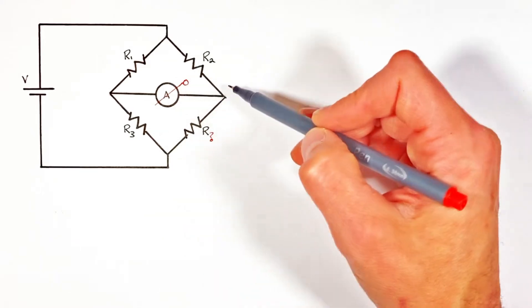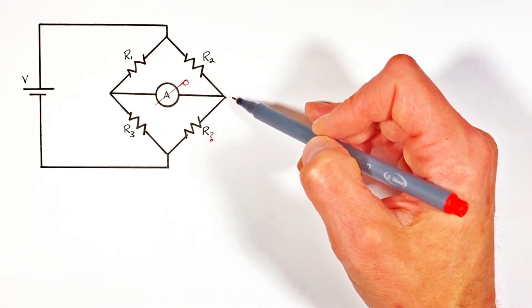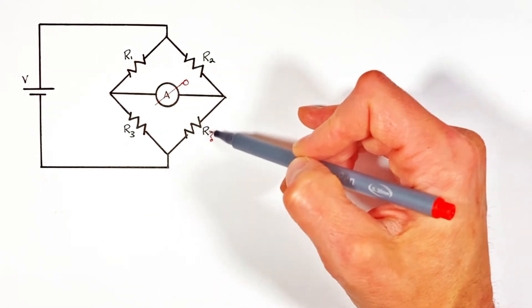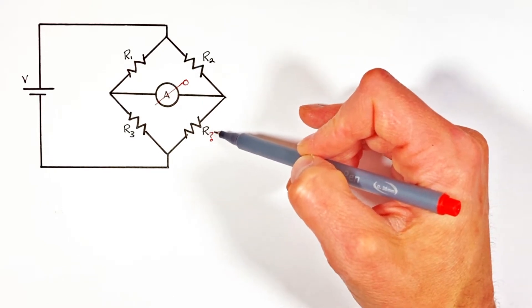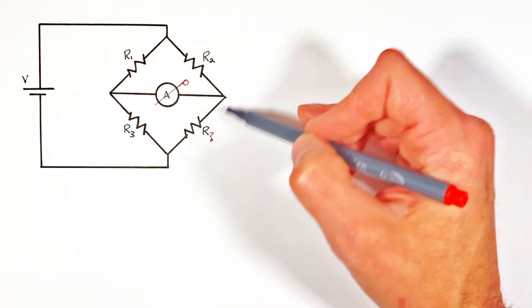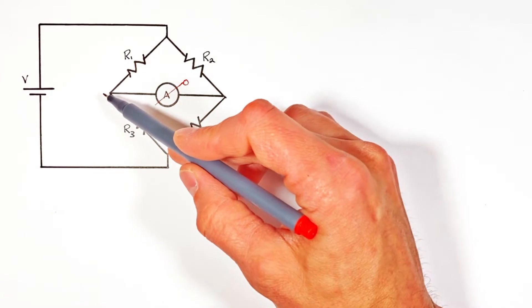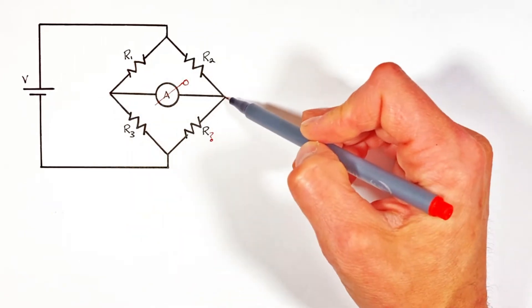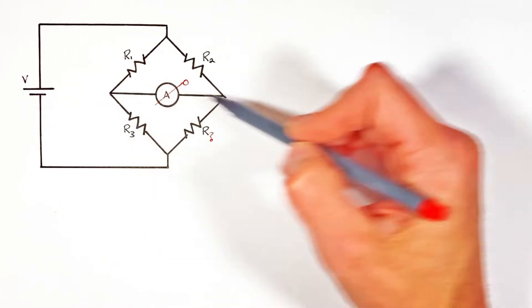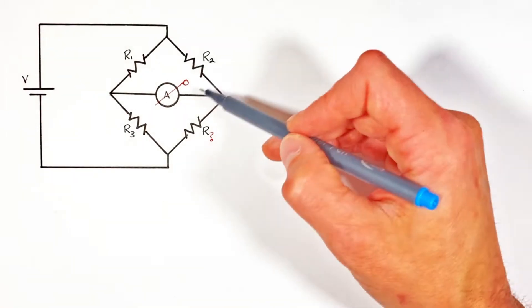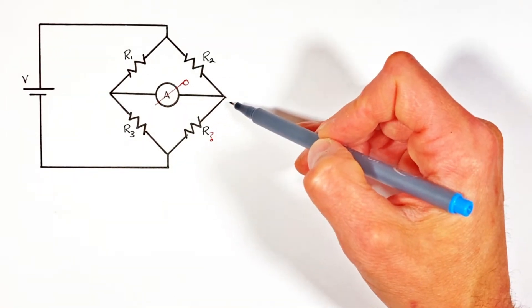But today we're just going to go through and work out the required value for this resistor so that the two sides are what we'd say are balanced, or they're ultimately allowing no current to flow from one side of the circuit to the other. Now as soon as some people start talking about Wheatstone bridges, they like to start diving into the loop rule and the junction rule.